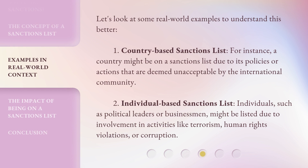Let's look at some real world examples to understand this better. First, Country-Based Sanctions List: a country might be on a sanctions list due to its policies or actions that are deemed unacceptable by the international community. Second, Individual-Based Sanctions List: individuals, such as political leaders or businessmen, might be listed due to involvement in activities like terrorism, human rights violations, or corruption.